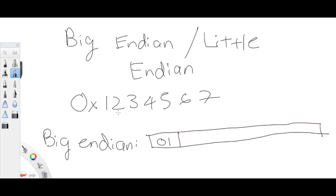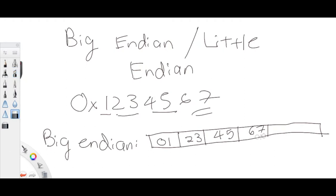So storing every two bytes: it would be 01, then 23, then 45, then 67. The rest is just empty. So yeah, this would be what big endian looks like.